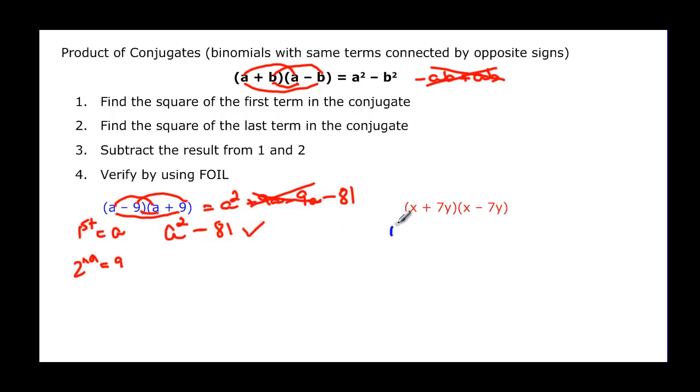My first terms are x. And my second terms are 7y. So if I square this first one, it's going to be x squared. And if I square the second one, remember it's 7y that I'm squaring. So that will be 7 squared is 49. And y squared is y squared. And then we make a subtraction out of it. And we have our solution.